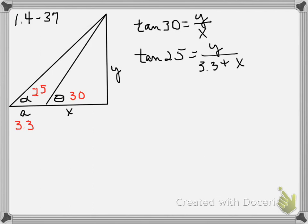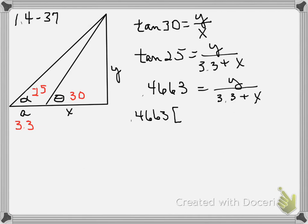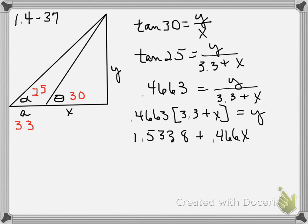The tangent of 25 degrees is 0.4663, and that equals y divided by 3.3 plus x. Multiplying both sides, and using the distributive property: 0.4663 times 3.3 is 1.5354, plus 0.4663x equals y.